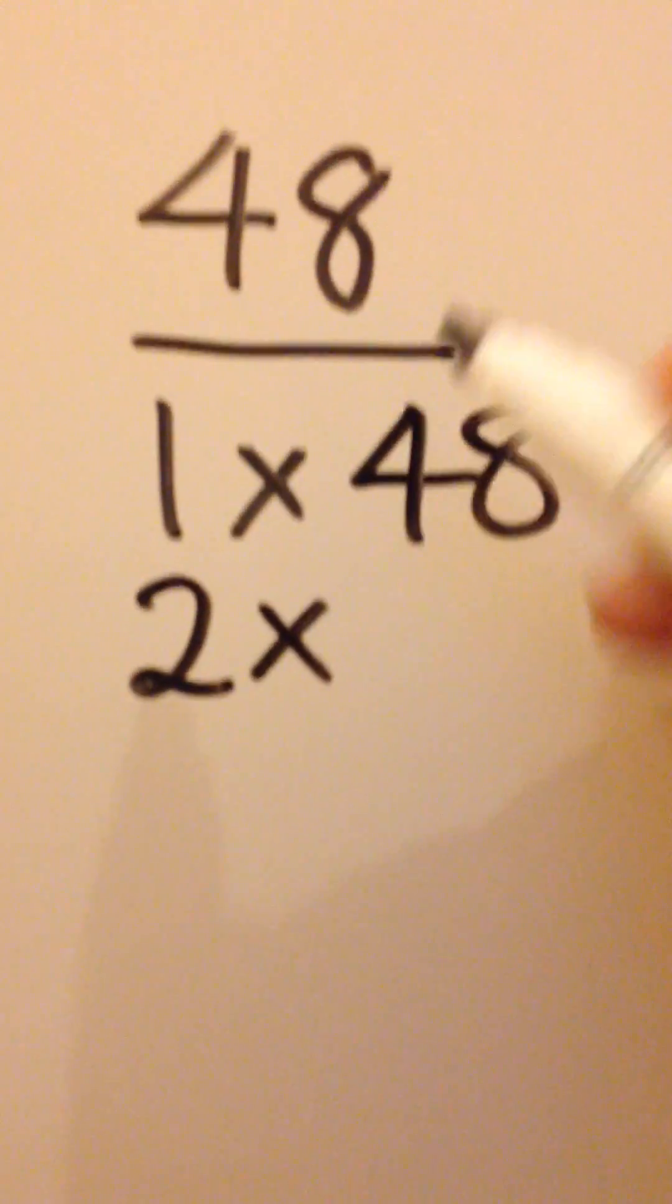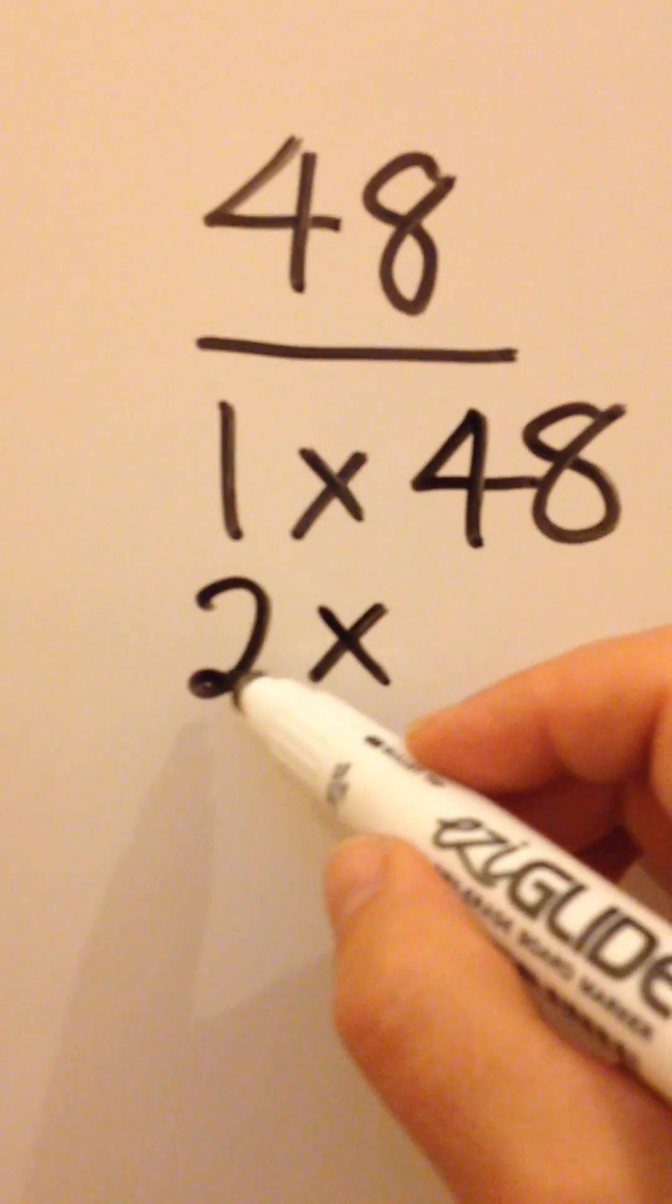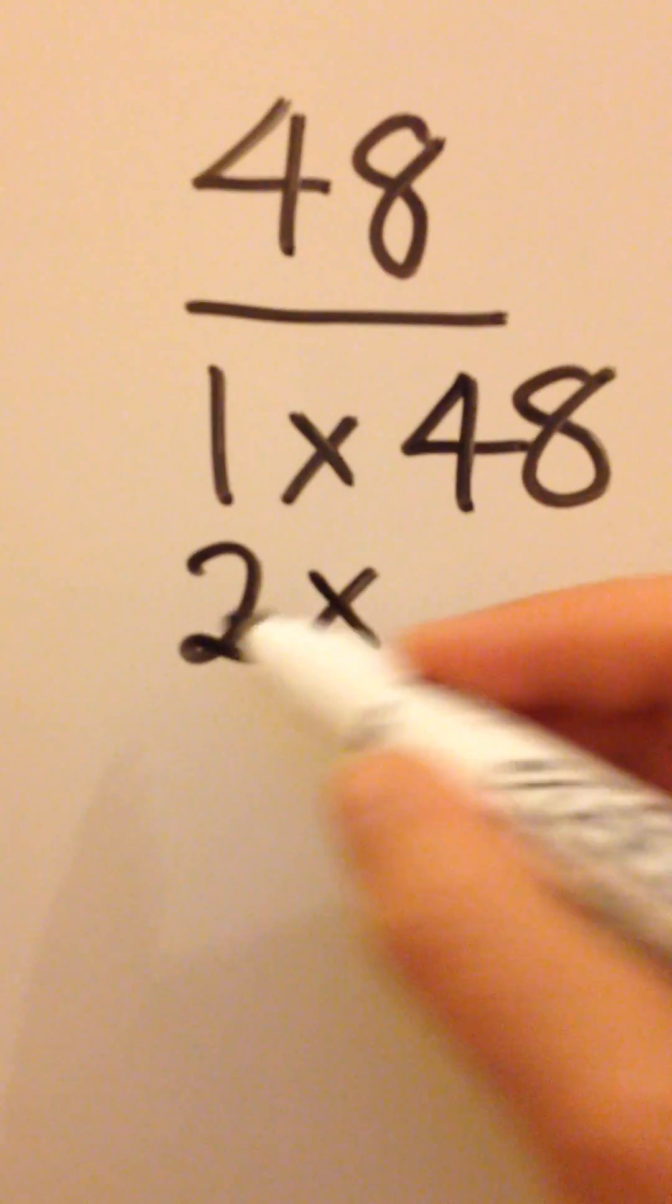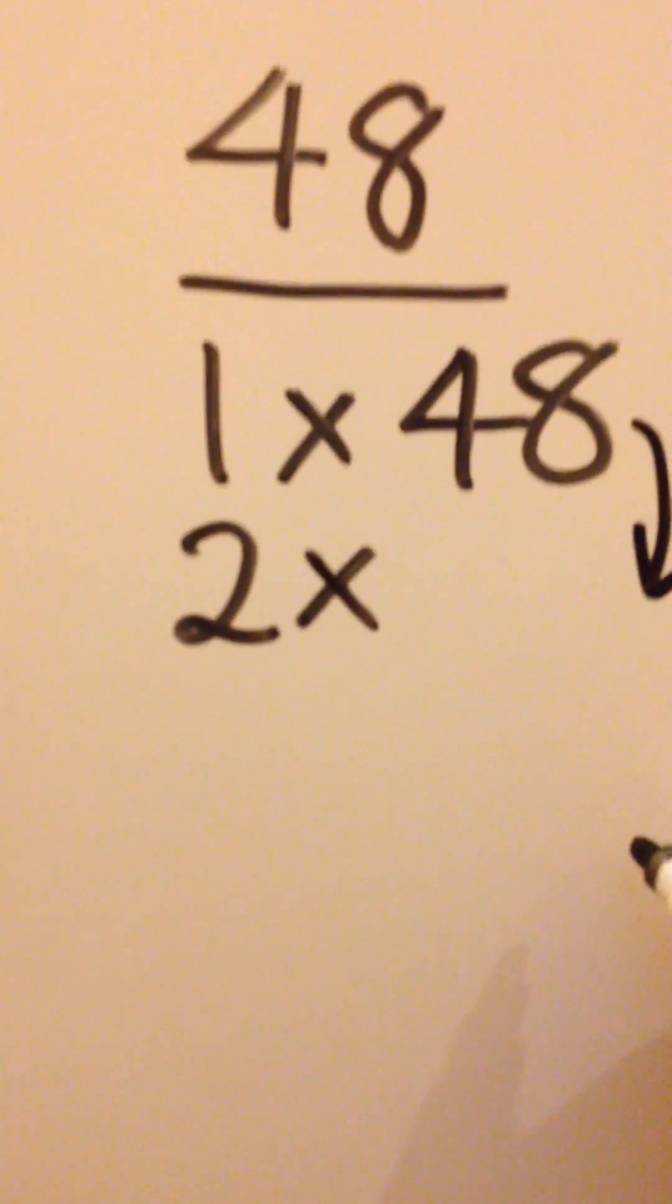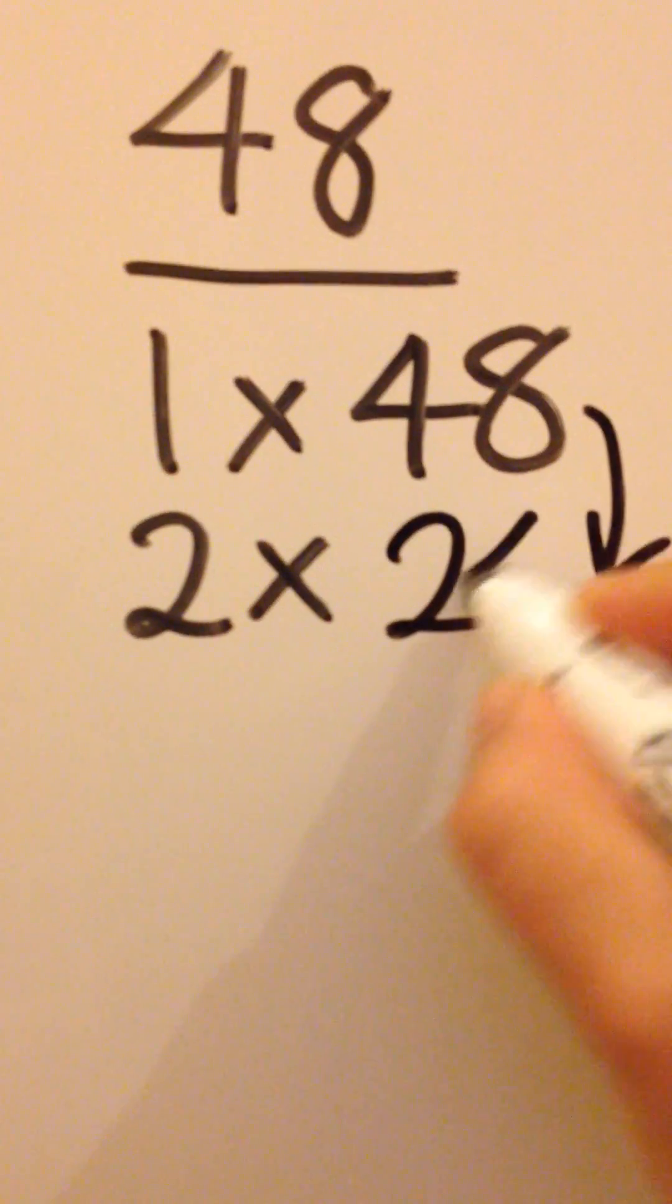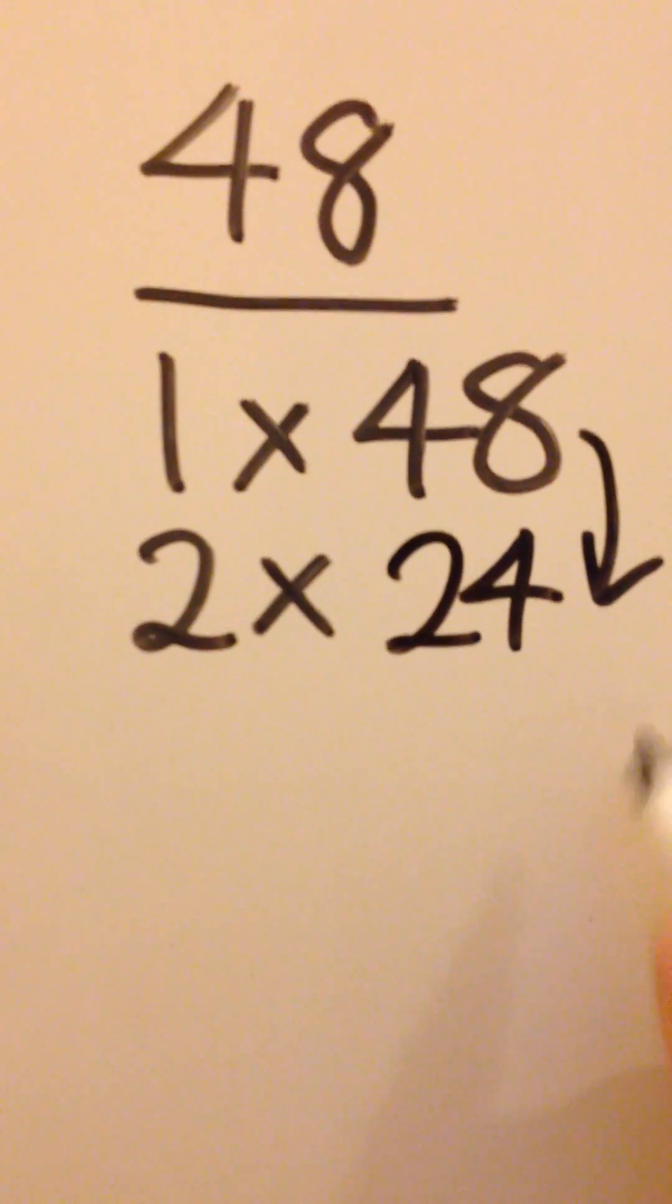Move straight on to 2 times. 48 is an even number, so I know that 2 is a factor. 2 times what? All you have to do is halve this number to give you 24, or you could try a bus stop instead.